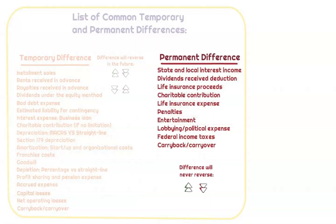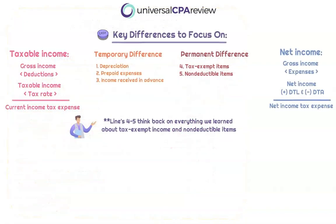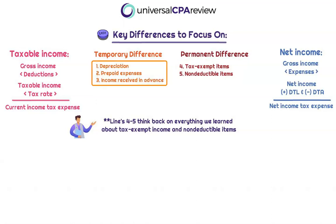I would recommend starting with understanding the permanent differences, as this is a little bit more intuitive. Tax-exempt items and non-deductible items should be somewhat familiar language at this point. We know that state and local interest income is never going to be taxed, and life insurance proceeds will generally not be included. For non-deductible items, think penalties, lobbying, and political expenses — never going to be deductible, therefore that difference will be permanent. For temporary differences, think depreciation — the difference between straight line on one and accelerated depreciation on the other eventually reverses. Same goes for prepaid expenses and income received in advance: recognized in entirety when cash is paid or received on the tax return, but not until earned or incurred in the financial statements.